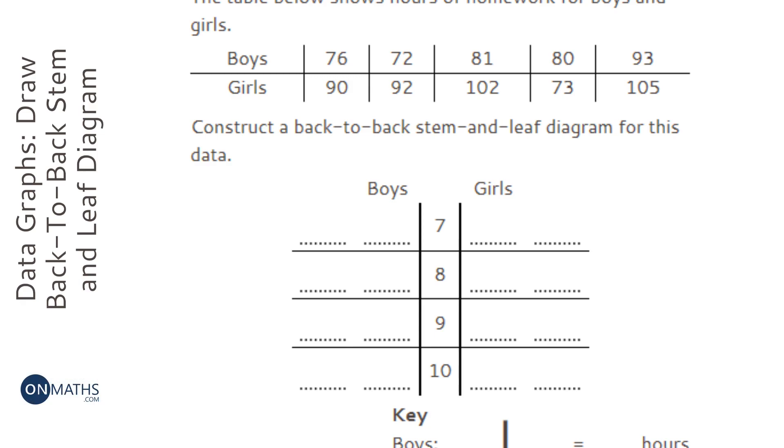I'm going to start with the girls. 73 is the smallest value, so instead of writing 73 in the girls column, I'm just going to put a 3 in the 7 column. That means 73. That's how a stem and leaf diagram works - you only put the units, you don't put the tens.